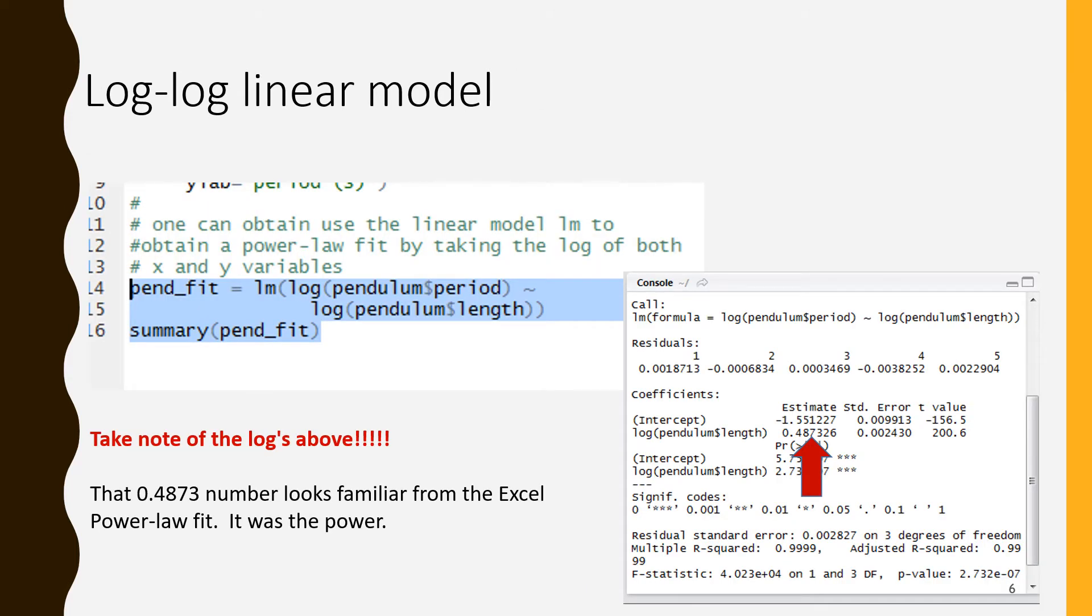Next we are using the lm method from R, the linear model method. Normally we would say linear model open parenthesis and then we would have the y values tilde the x values. But that would be to fit to a straight line. In this case we are fitting to a power law. So instead of having just the y's and the x's we have log of the y's and the log of the x's. So we have lm open parenthesis log open parenthesis pendulum dollar sign period close parenthesis tilde log open parenthesis pendulum dollar sign length close parenthesis. That is giving us the linear model of the log log data.